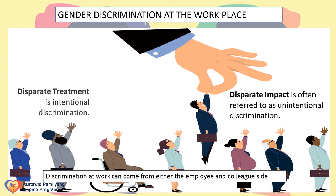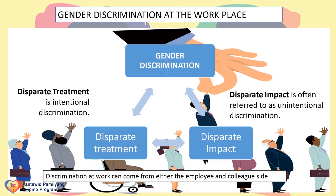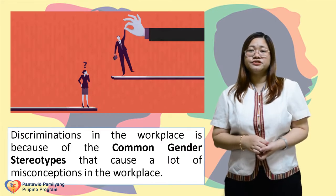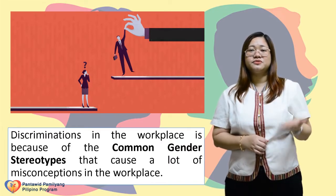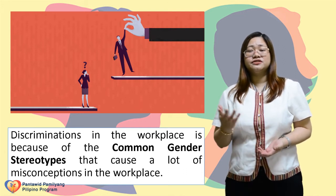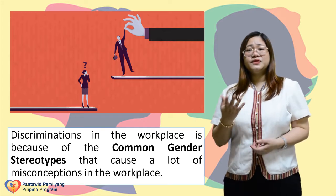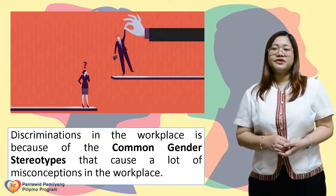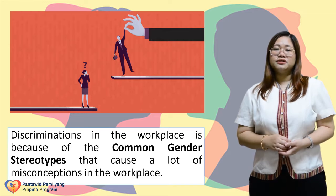Disparate impact is discrimination that is not intentional. An example is a parcel delivery service that hires only drivers who speak English. On the other hand, disparate treatment involves intentional acts of discrimination — for example, a parcel delivery service that does not hire female drivers. Discrimination in the workplace often stems from common gender stereotypes that cause misconceptions. As with any stereotype, gender stereotypes prevent effective communication between men and women. They can even create friction and discord, which lessens company morale and productivity.